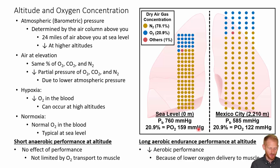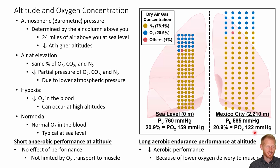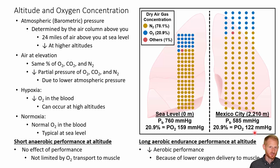You want higher partial pressure of oxygen pushing oxygen into your blood. At sea level it was 159 mmHg, but in Mexico City it's only 122 mmHg. That means less pressure pushing oxygen into your bloodstream, oxygenating your red blood cells and hemoglobin, so you're not going to get as much oxygen flowing around your body.